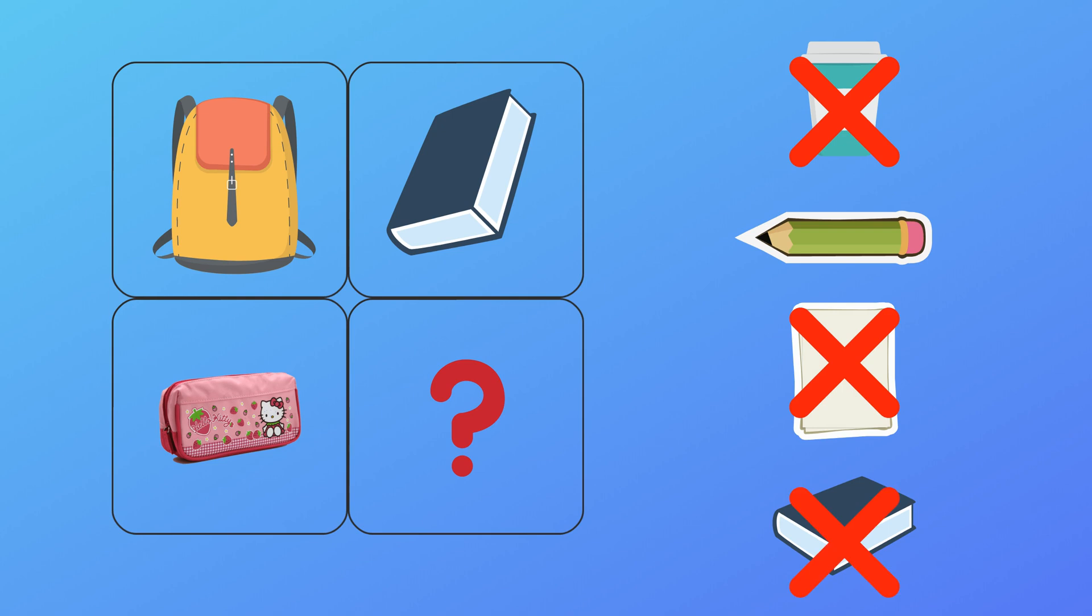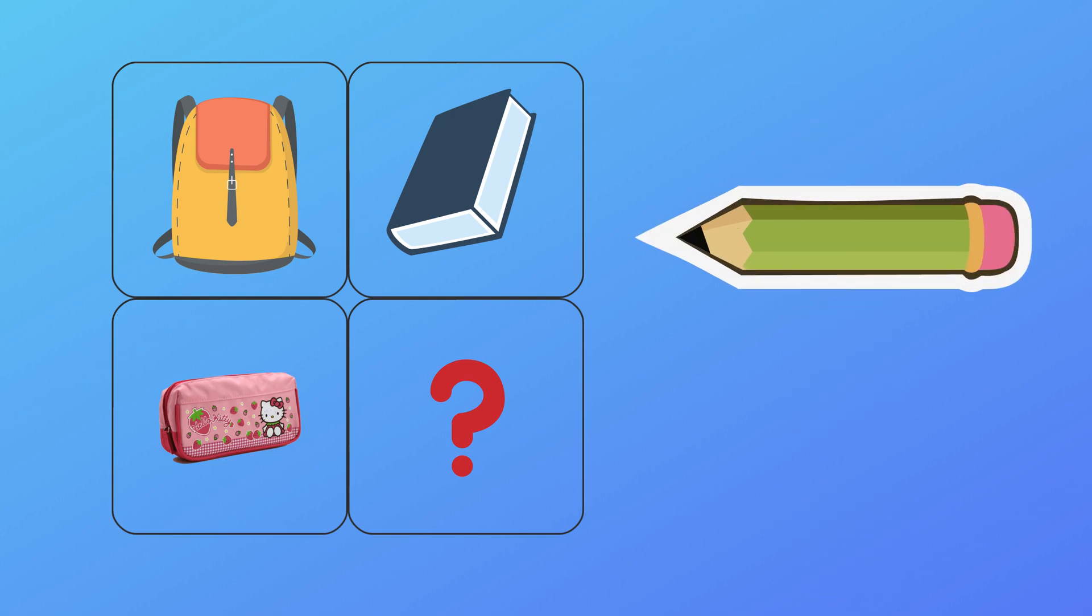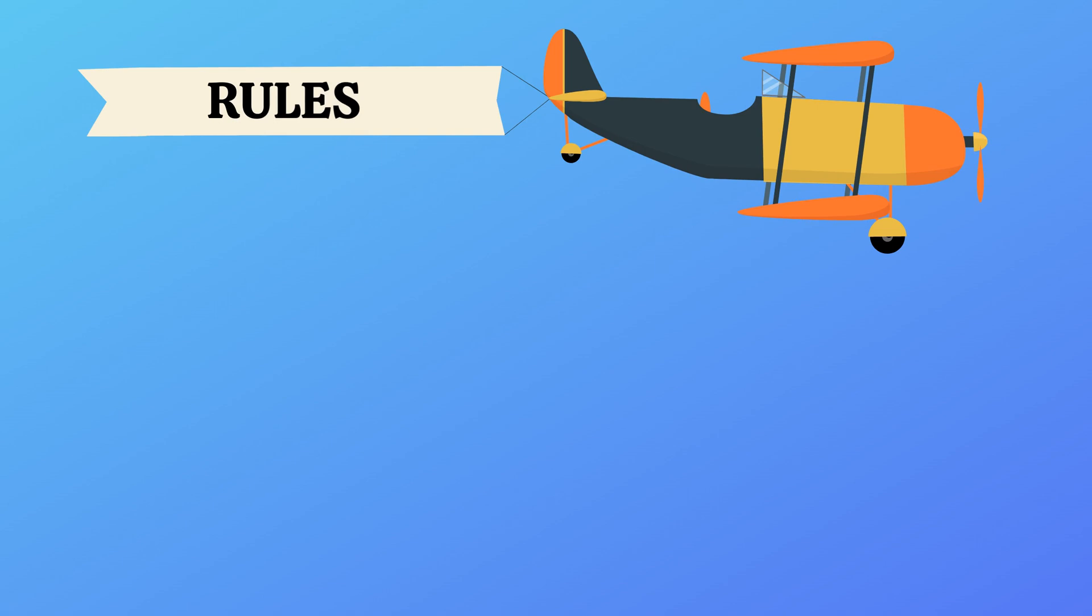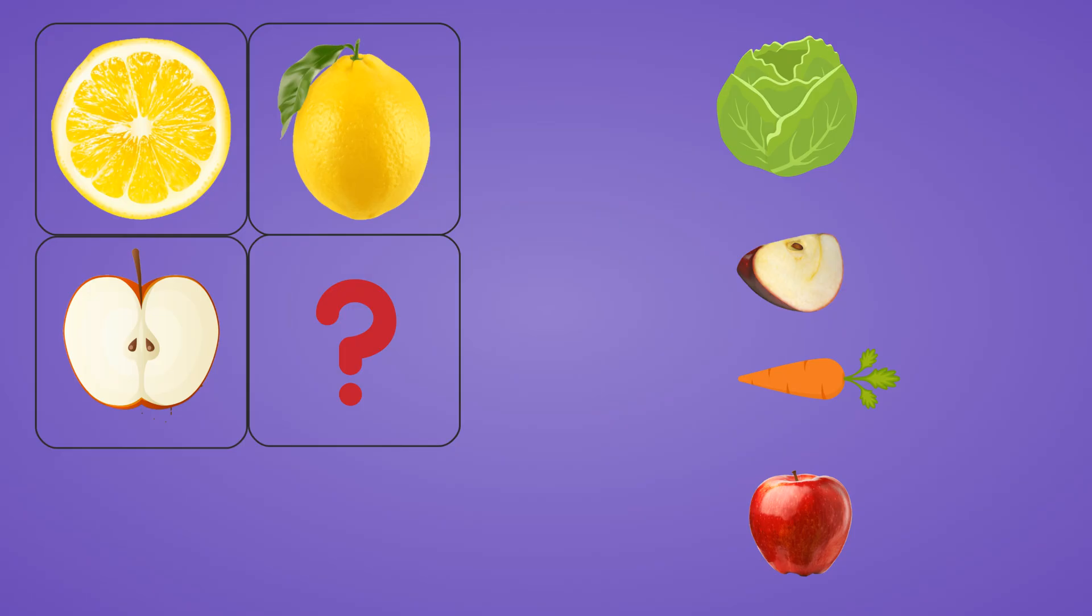Let's look at some of the rules. Rule one: half is to full. In this question, the first picture is a half lemon and the second picture is a full lemon. It is a half-is-to-full relationship. Let's apply the same rule to the bottom picture. As the bottom picture is a half apple, the answer should be a full apple.